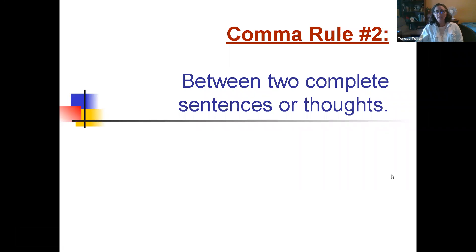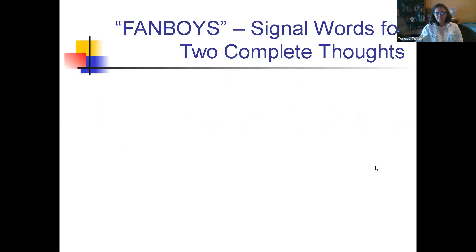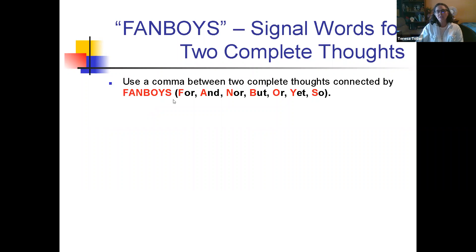Comma rule number two is between two complete sentences or thoughts. We've talked about FANBOYS before. FANBOYS are those signal words that tell you two complete thoughts. We talked about those when we did our lesson on fragment sentences, run-on sentences or complete sentences. So FANBOYS is an acronym to remind you of the words: for, and, nor, but, or, yet, or so. If you use one of the FANBOYS, you should use a comma.